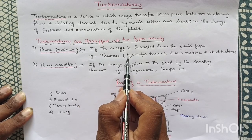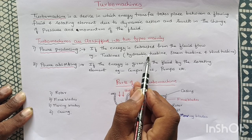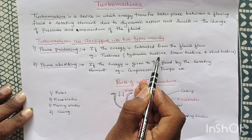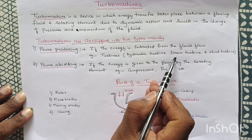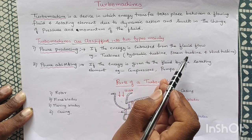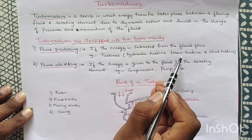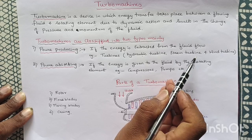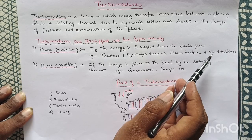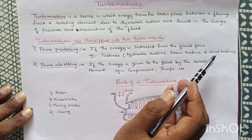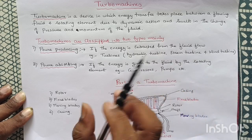If water is used as the fluid, it is called a Hydraulic Turbine. If steam is used as the fluid, it is called a Steam Turbine. If air is used as the fluid, it is called a Wind Turbine.